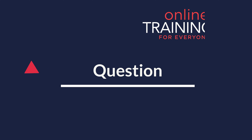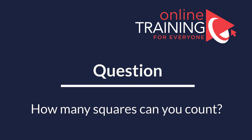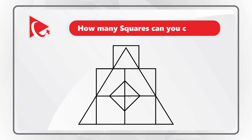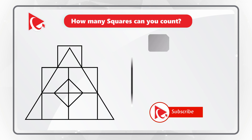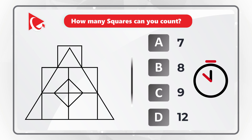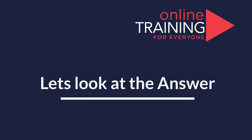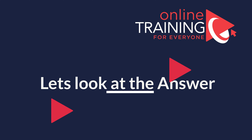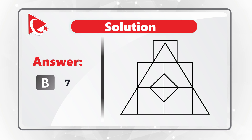Here is an interesting question where you need to correctly count the number of squares on a picture. Take a close look and select from one of the following choices: choice A – 7 squares, choice B – 8 squares, choice C – 9 squares, and choice D – 12 squares. Make sure to count inside and outside squares to get to the correct solution. Let me show you the final answer. I counted 7 squares in the picture. Obviously, if you have a different answer, please make sure to post your solution in comments.